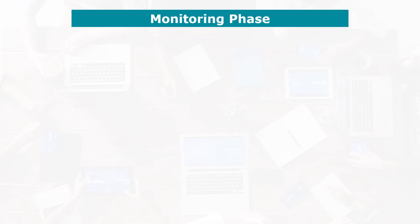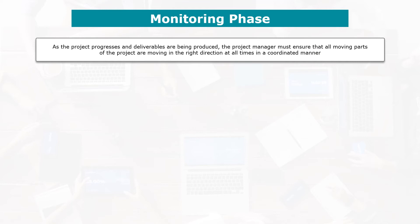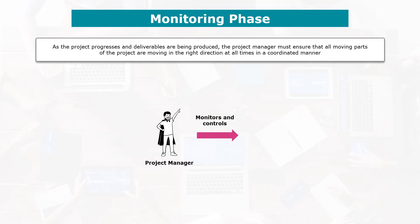Let's talk about the monitoring and controlling phase of a project. This phase coincides with the execution phase. As the project progresses and deliverables are being produced, the project manager must ensure that all moving parts of the project are moving in the right direction at all times and in a coordinated manner.